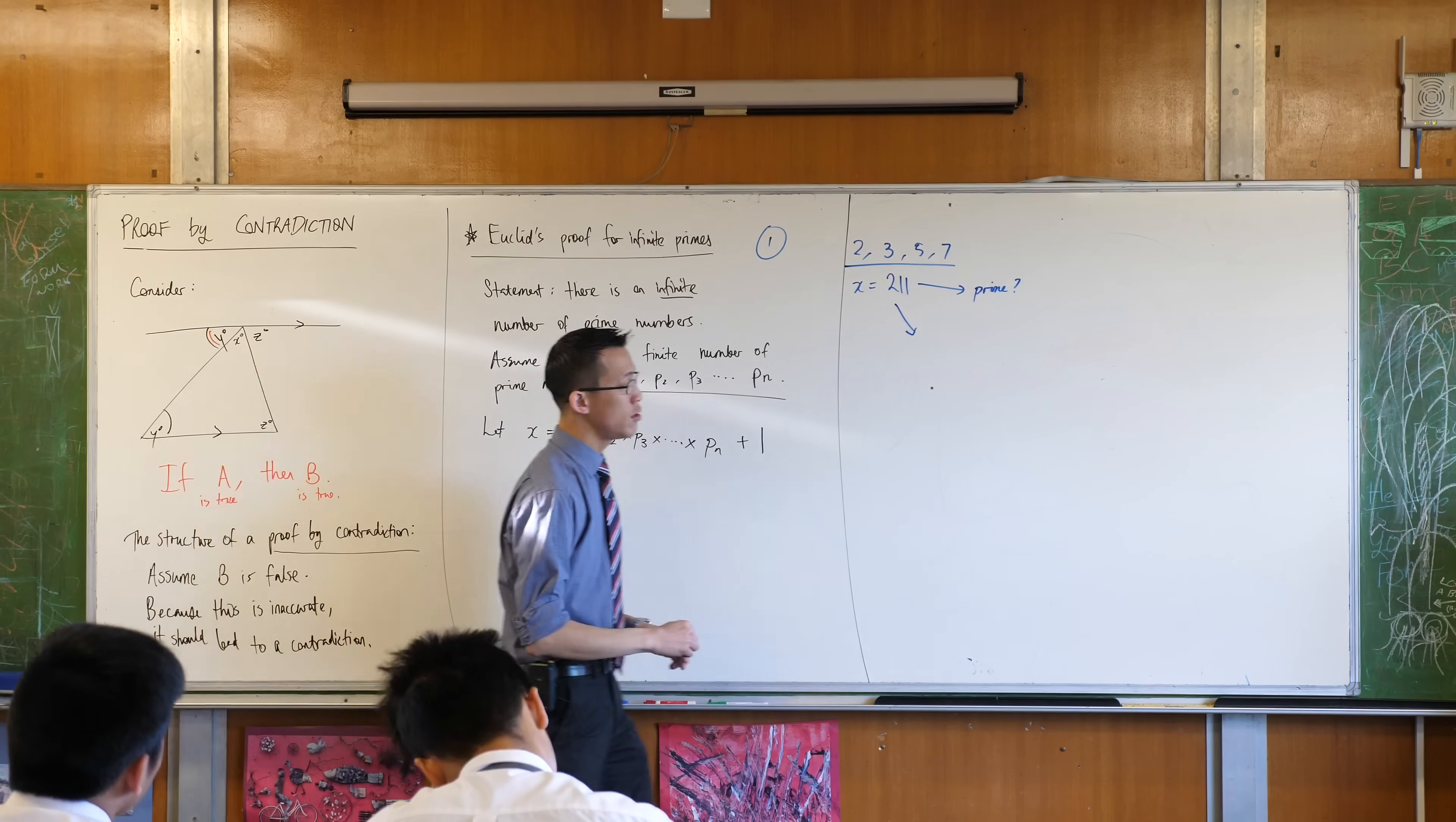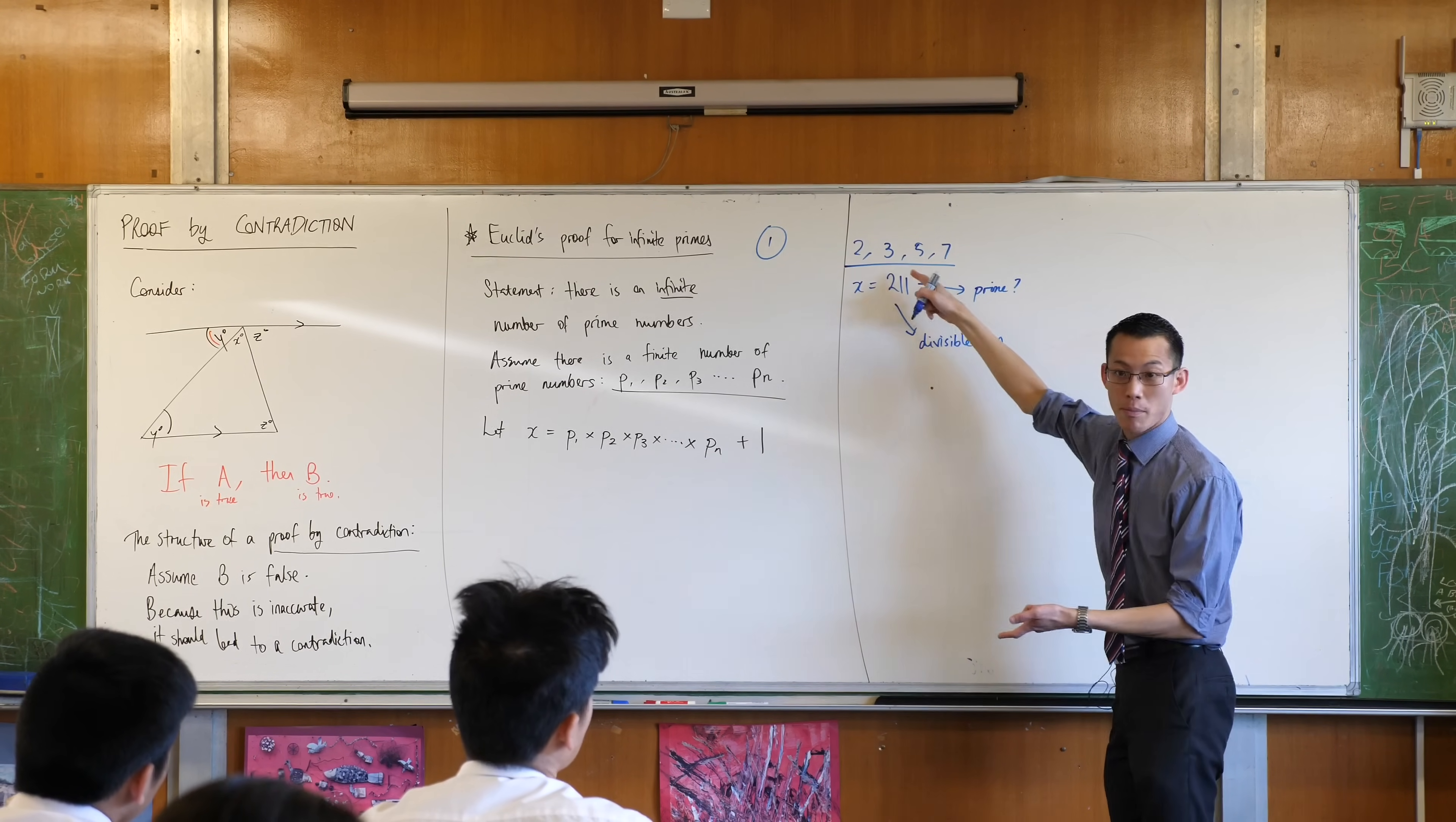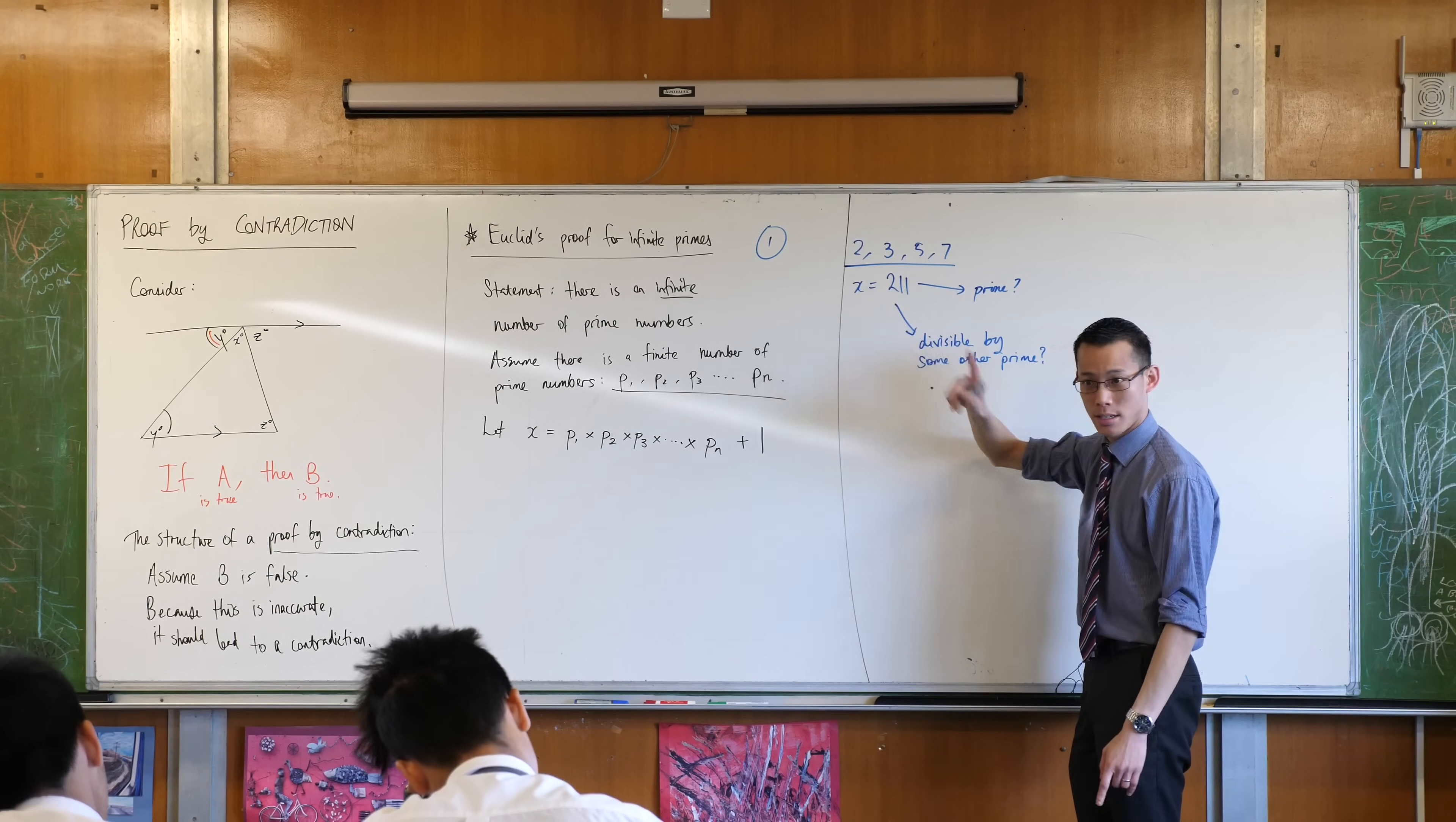There is one other alternative. 211 is a big number. Maybe it's divisible by something else, right? If it's divisible by something else, then what does that mean about this list? It's still not complete, right? So this might be divisible by, like, it might not be prime. 211 might not be prime. But it might be divisible by some other prime. In both of these cases, I'm in trouble because both of these cases suggest that this list, as it clearly isn't, isn't complete. Does that make sense?